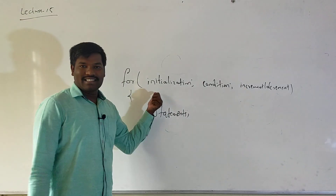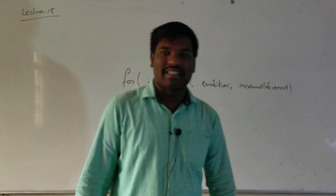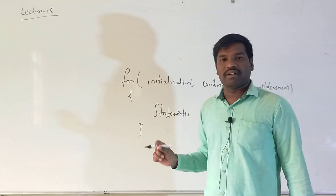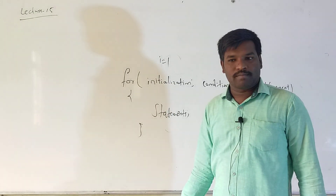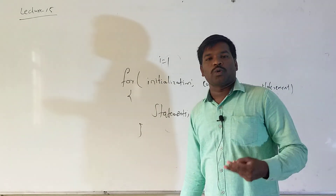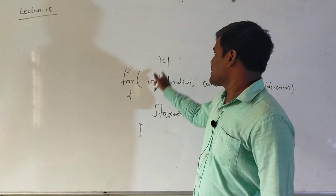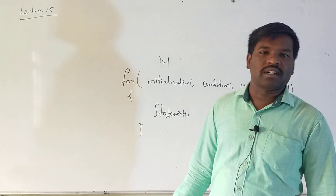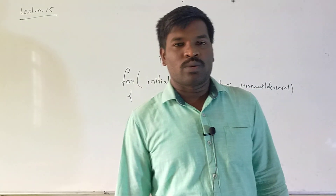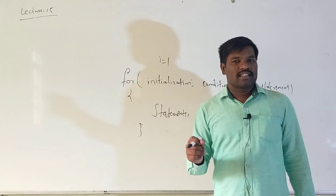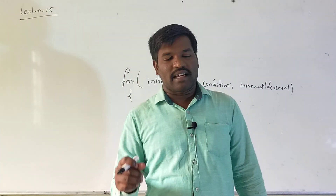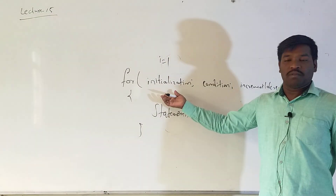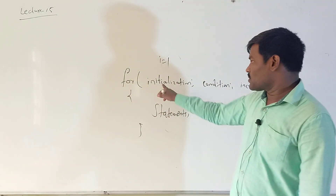The first step is initialization, which means assigning some value to a particular variable. For example, you can initialize i equal to 1. If you want to print numbers from 1 to 10, first you initialize i equal to 1. In while and do-while you can assign i equal to 1 at the time of declaring the variable, but in the for loop we initialize i equal to 1 within the loop header.